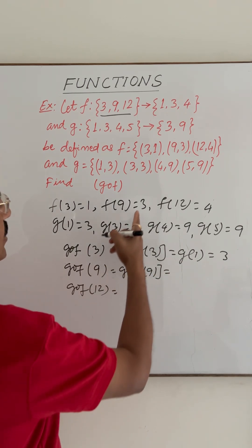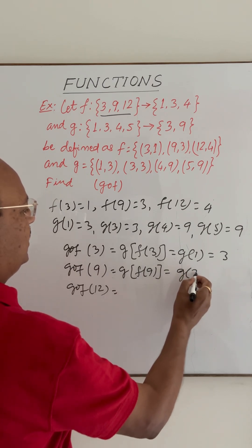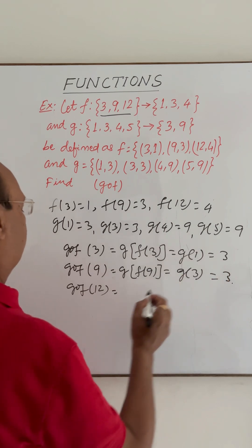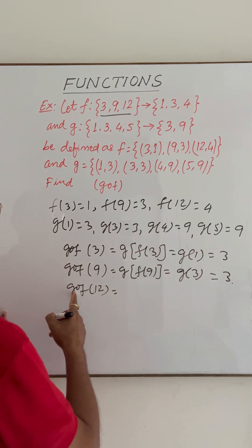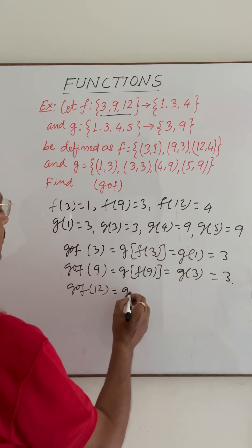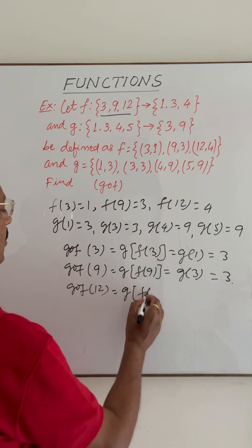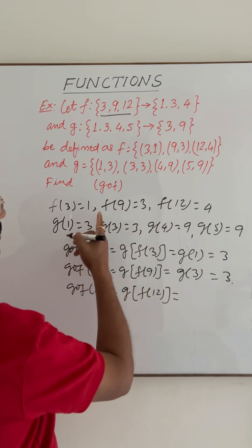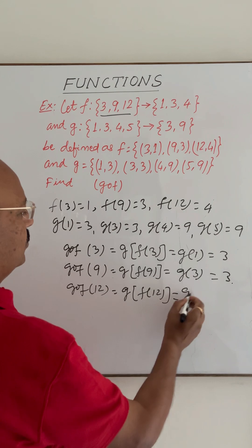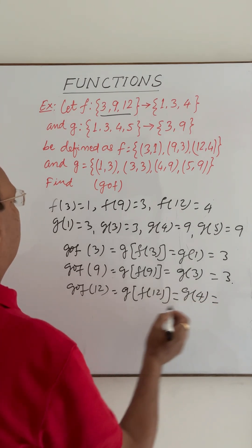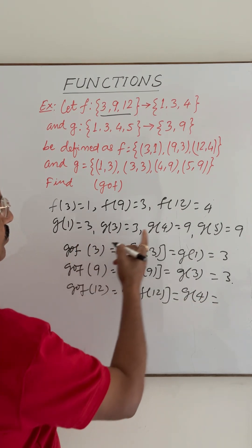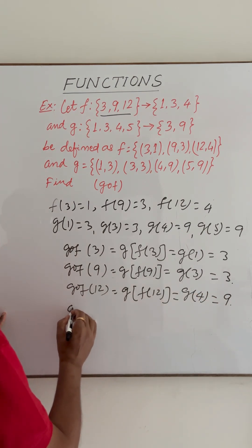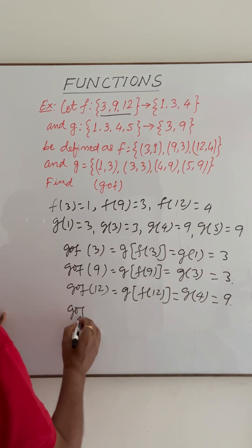Since f(9) = 3, we get g(3), and g(3) = 3. g∘f(12) can be written as g(f(12)), and f(12) = 4, so we get g(4), and g(4) = 9.